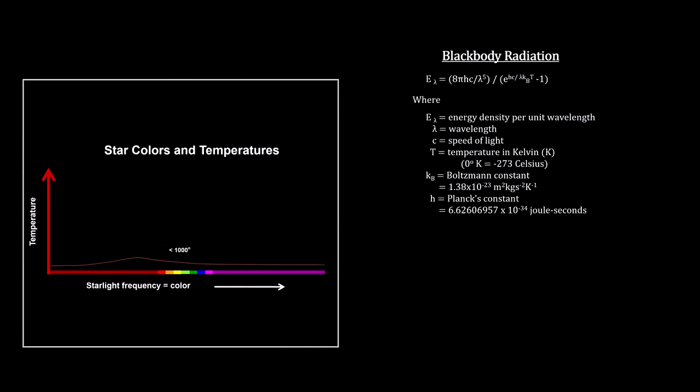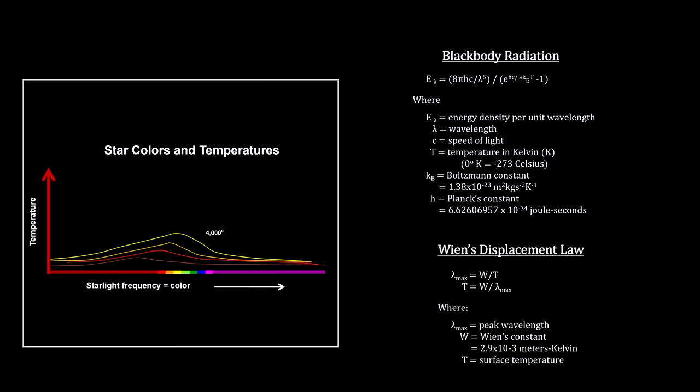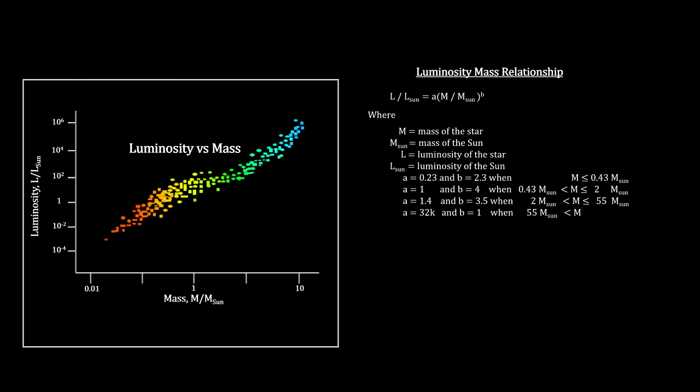As outlined in the How Far Away Is It chapter on distant stars, the black body radiation formula gives us the relationship between a star's color and its temperature. In addition, the mass versus luminosity relationship provides a way to relate a star's temperature to its mass.